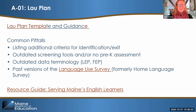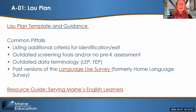Another common issue is listing identification tools that may have been used in past years but are now not up to date with what's required statewide. In the Lau plan template you will see a chart that describes by grade what the required screening assessments are. I recommend simply copying that chart and incorporating it into your Lau plan so that you're sure it's up to date.